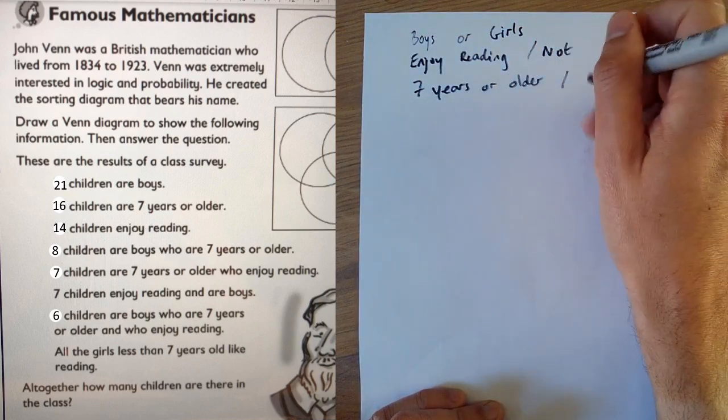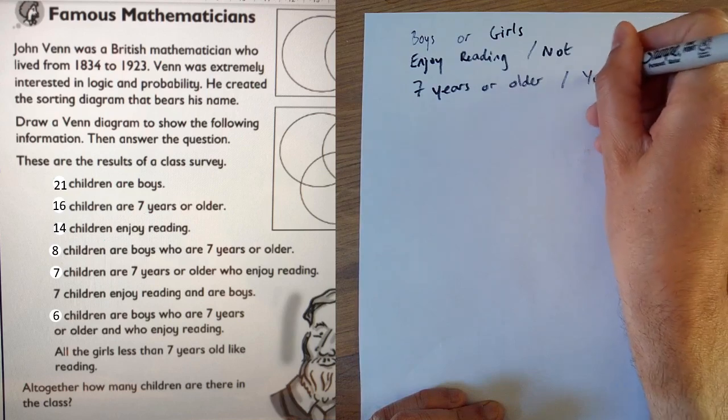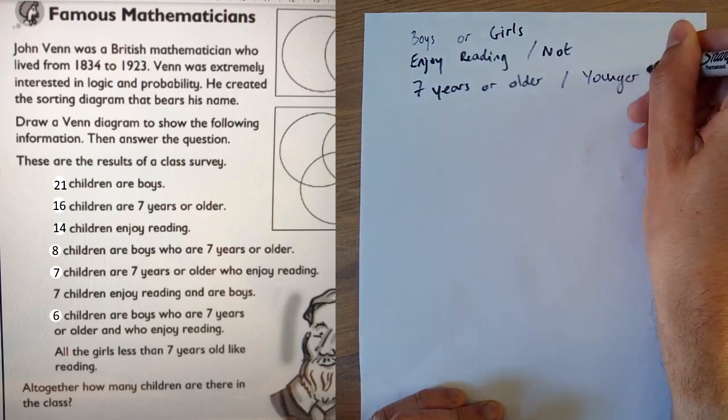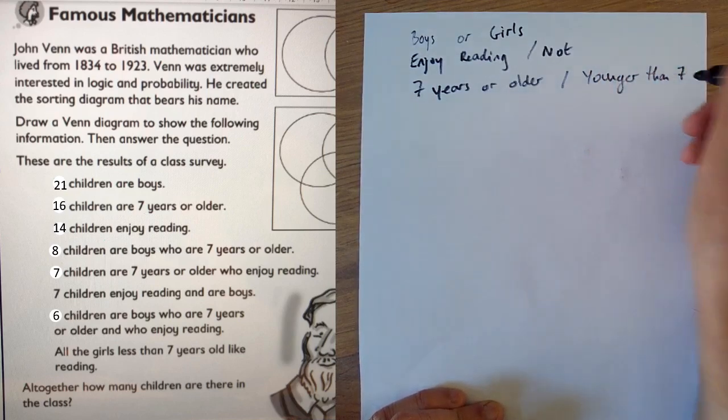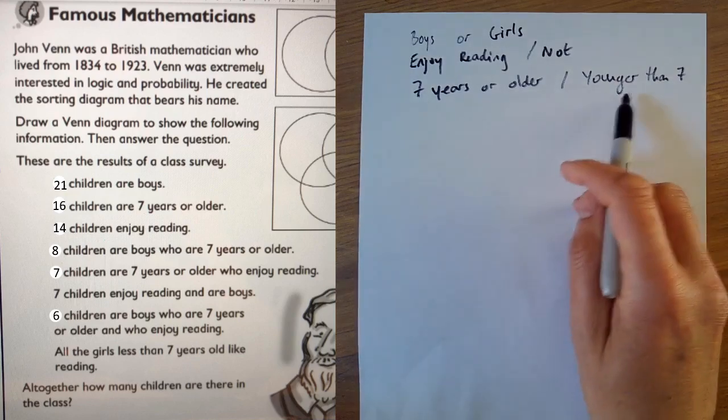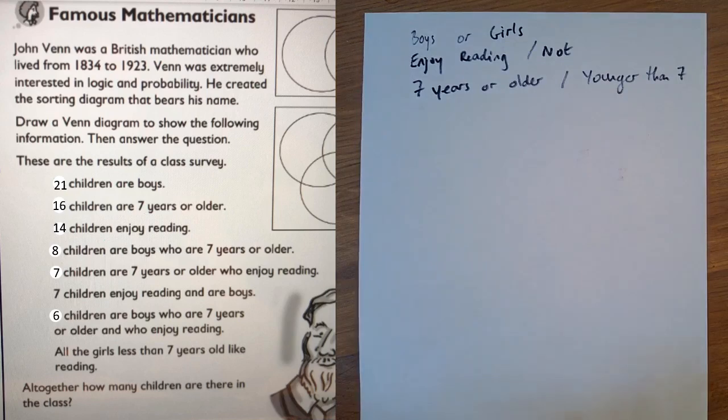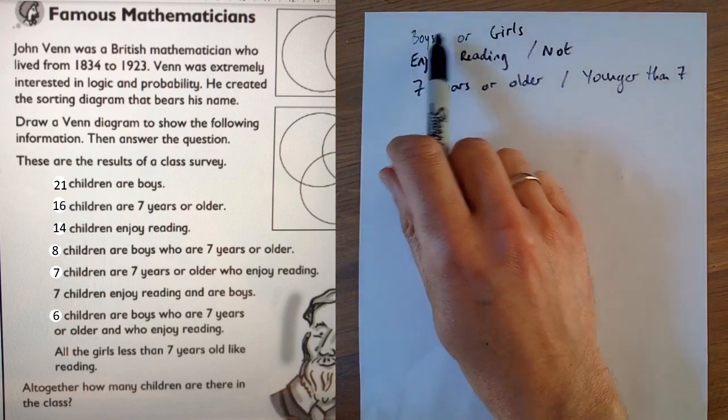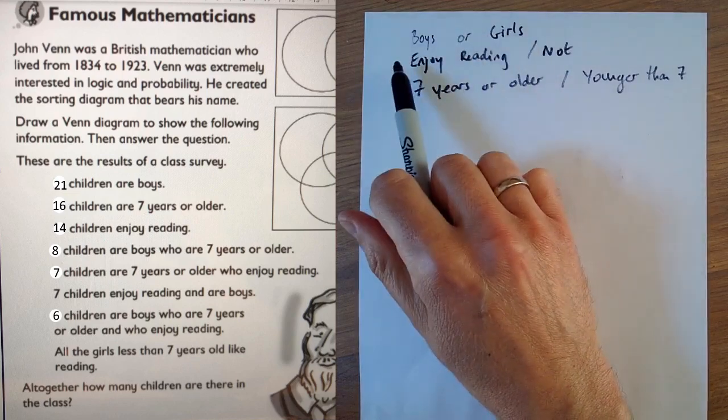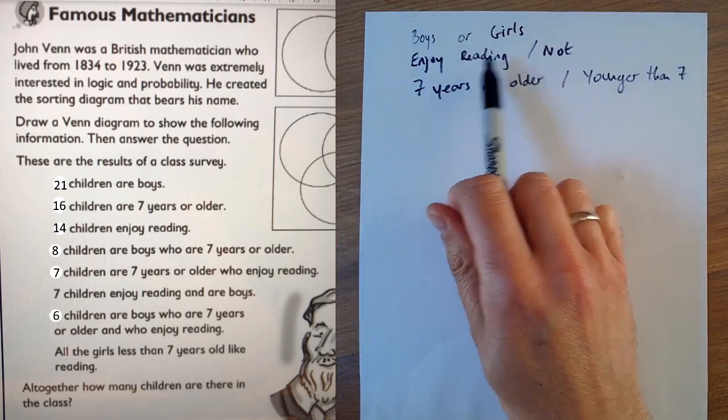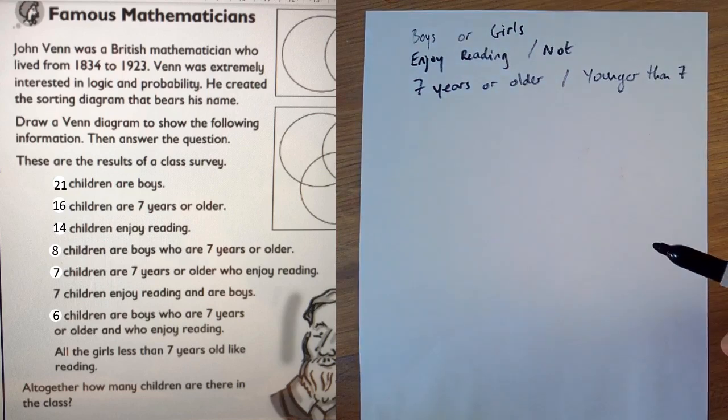Which would be younger than seven, of course. I'm going to write younger than seven rather than not. But you don't see that language in the question. It's just they're either seven years or older or they're not. There's nothing else you could be. So you've got two options here in terms of gender for every child. You've got two options here and you've got two options here.